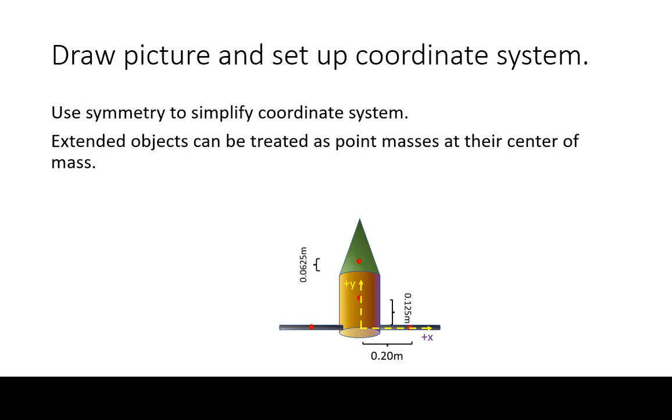For example, for the cylinder, its center of mass is going to be halfway through its height at the center of the base. For the thin rods, their center of mass will be halfway through their length. For a uniform density cone, its center of mass will be one quarter of the height above its base.